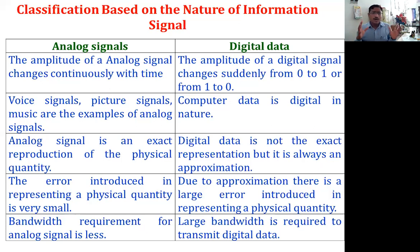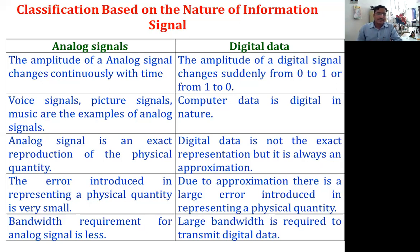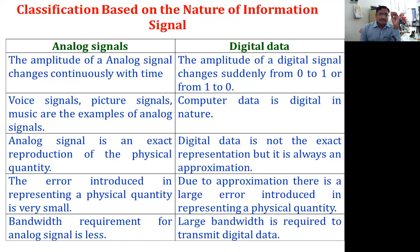A digital signal is basically a binary sequence of lows and highs — zeros and ones. Examples of analog signals: voice — my audio as I speak is an example of an analog signal; picture — what you observe on your screen is also an analog signal; and music — music is also an example of an analog signal.